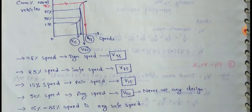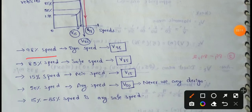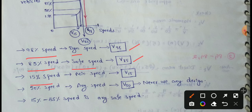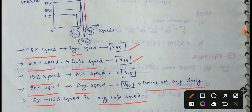V98, the 98th percentile speed, is the design speed. V85, the 85th percentile speed, is the safe speed. V15, the 15th percentile speed, is the minimum speed. The 50th percentile speed is the average speed, which is generally not used for design. The range from 15% to 85% of speed represents the average safe speed range.